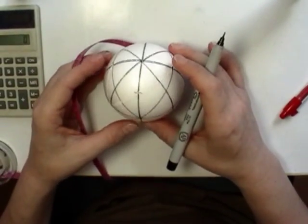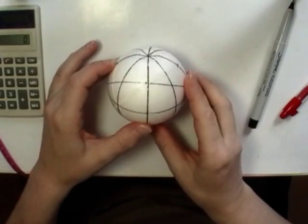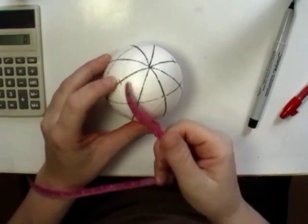Now you get a, looks like a big X there. All right, next, turn your ball 90 degrees.